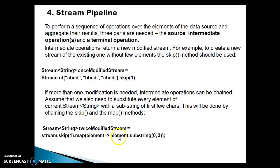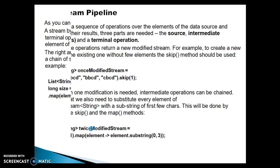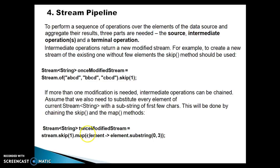In map we pass a lambda expression — lambda arrow element.substring(0, 3). Basically we are just substituting every element; for example if the first element is 'abcd', we take characters from index 0 to index 2 (since the last index is exclusive). So that will give 'abc', 'bbc', 'cbc' extracted. But since we applied skip, the first element is skipped, and for the second and third elements 'bbc' and 'cbc' will be extracted and stored into the resulting stream.